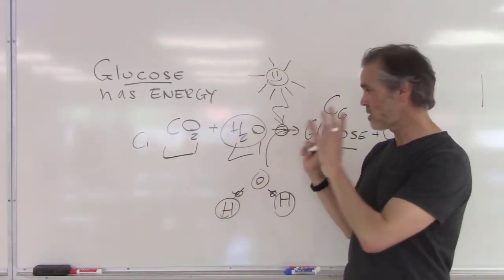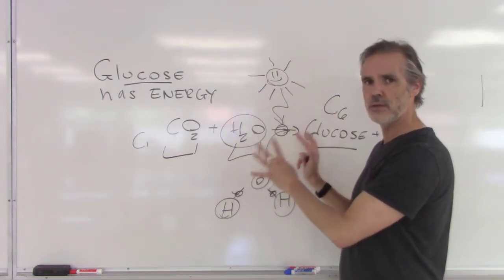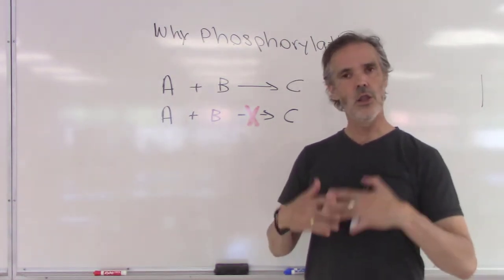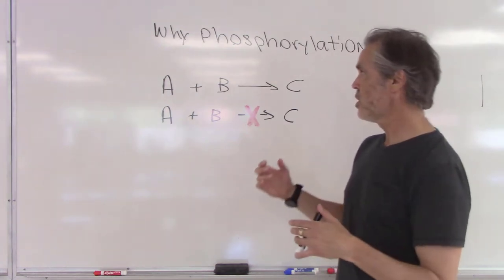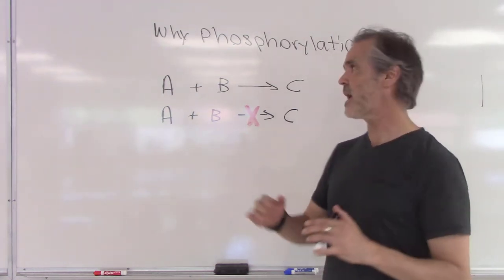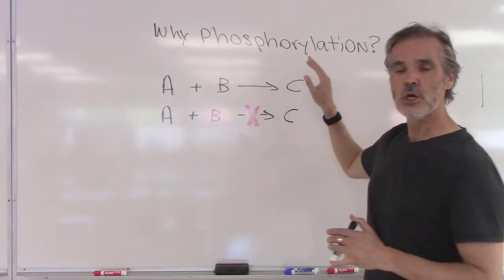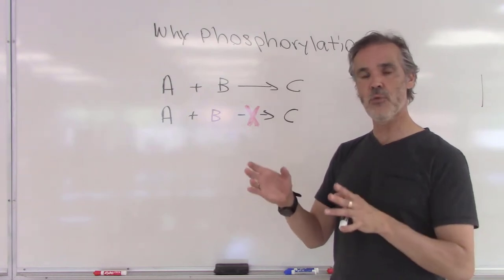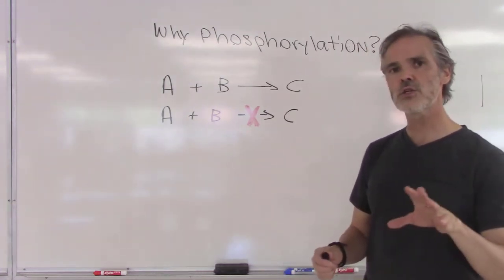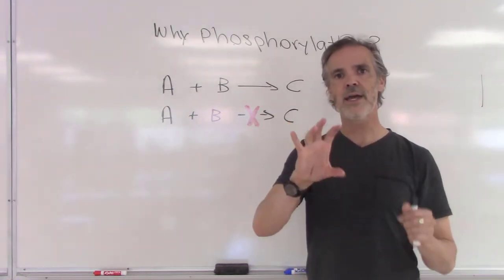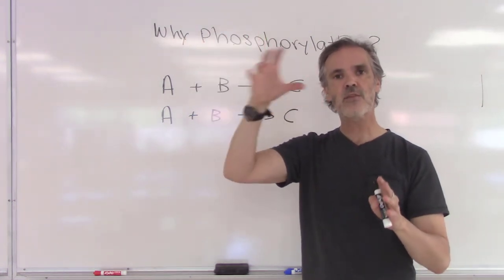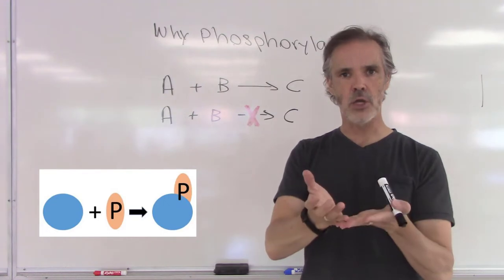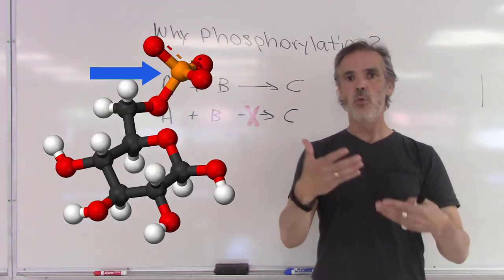Throughout the process of glycolysis and even after that, and in lots of different biochemical processes, we will see that the term phosphorylation comes up over and over again. I want to make sure you understand why phosphorylation is important and actually what phosphorylation is. Phosphorylation means that when we have a molecule and we add a phosphate group to it — that's what phosphorylation is. It's basically adding a group to part of a molecule. Glucose, for example, in glycolysis will be phosphorylated.